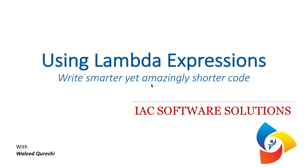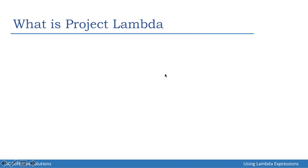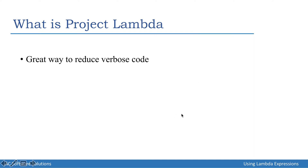Today I'm going to talk about a very exciting topic: Project Lambda, the most significant feature introduced in Java 8. It can help us greatly in writing smarter but at the same time shorter code. It's a great way to reduce verbose code, going even a step further than what we achieved through inner classes. We'll still be able to do the very same things as before Java 8, but now we'll be able to do them more smartly and concisely.